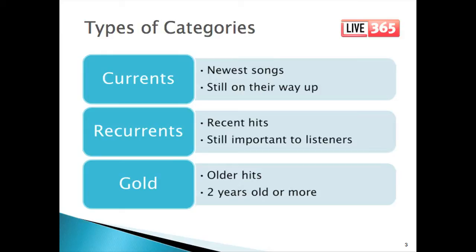The second group, Recurrence, consists of recent hits. These are songs that are past their prime in the sense that they're not on their way up the charts — they're on their way down. Consequently, they receive slower rotation than current hits. Recurrence could be songs that range from anywhere from six months old to two years old, but they're still extremely important songs. They're still the favorite songs of many people in the audience, and they need to be exposed a lot.